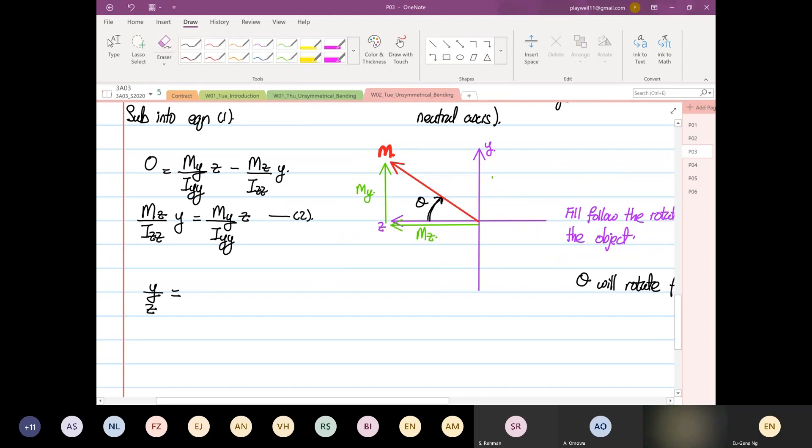Y over Z is equal to My divided by Mz, right? So My over Mz, Izz over Iyy. We have this expression, and this expression is, I'm going to call this expression as our equation number three.